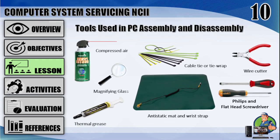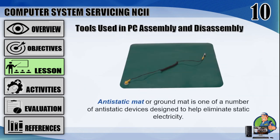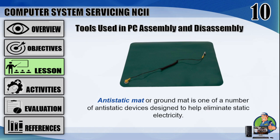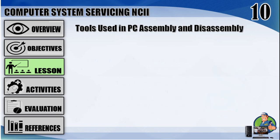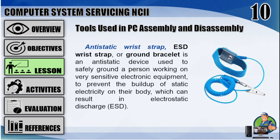Tools used in PC assembly and disassembly. Number 1: antistatic mat or ground mat is one of a number of antistatic devices designed to help eliminate static electricity. Number 2: antistatic wrist strap, ESD wrist strap, or ground bracelet is an antistatic device used to safely ground a person working on very sensitive electronic equipment to prevent the buildup of static electricity on their body, which can result in electrostatic discharge, ESD.